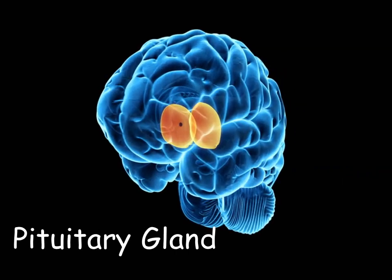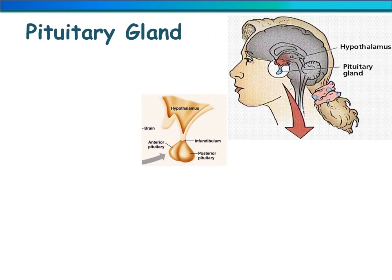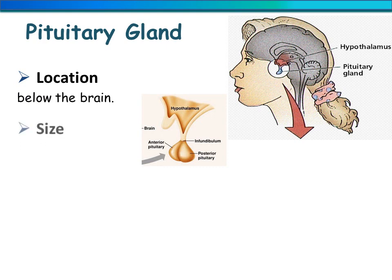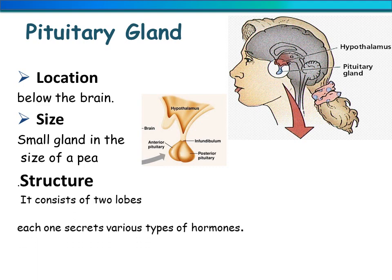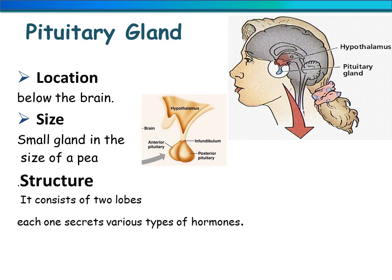First, we will talk about the main gland in our body. The main endocrine gland is called the pituitary gland. The pituitary gland is the master gland. It is found in the brain, located below the brain. Its size is very small, like a pea, and its structure consists of two lobes.